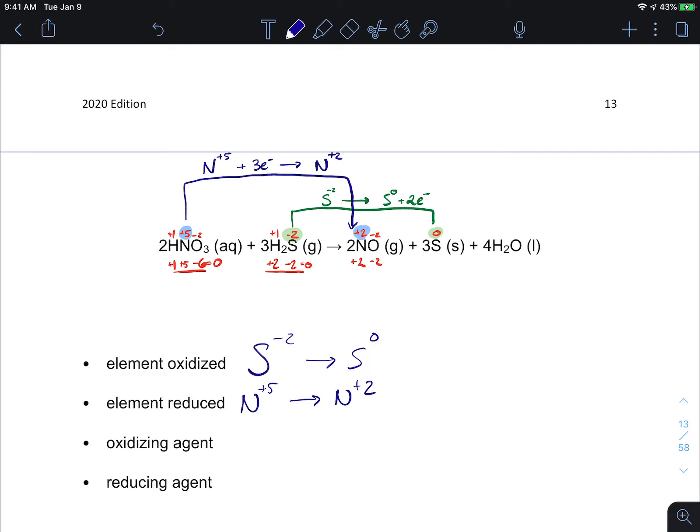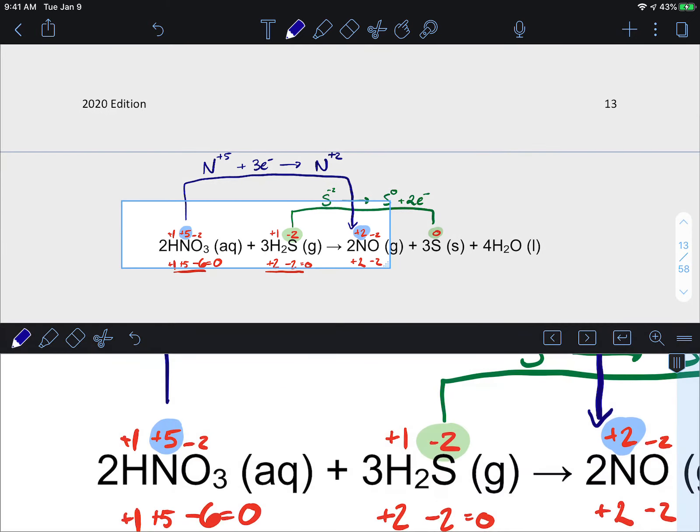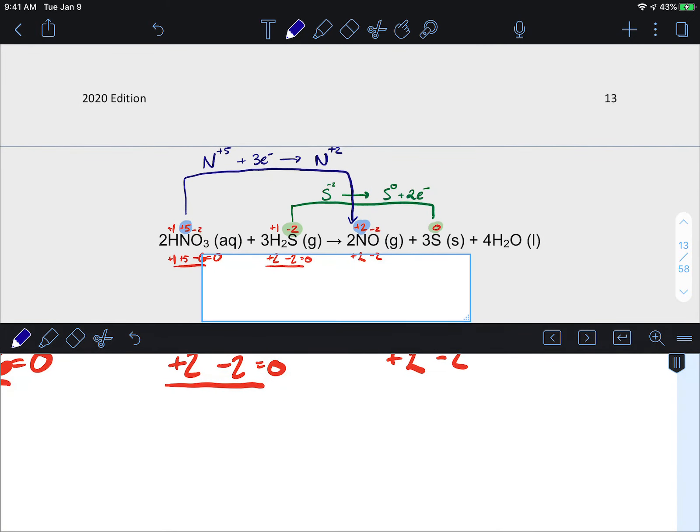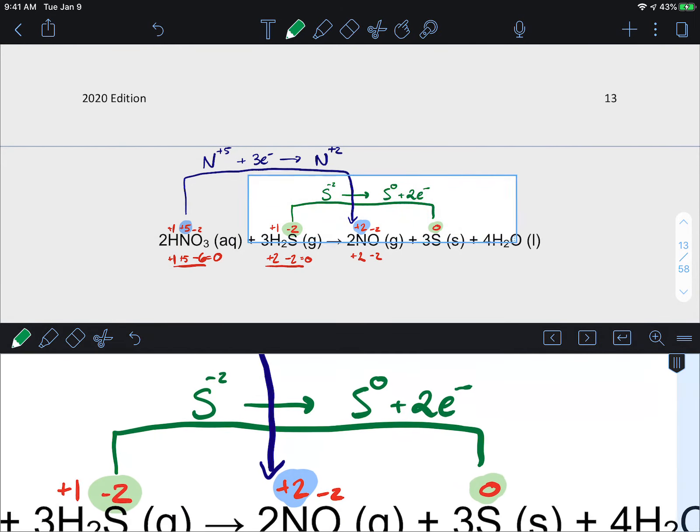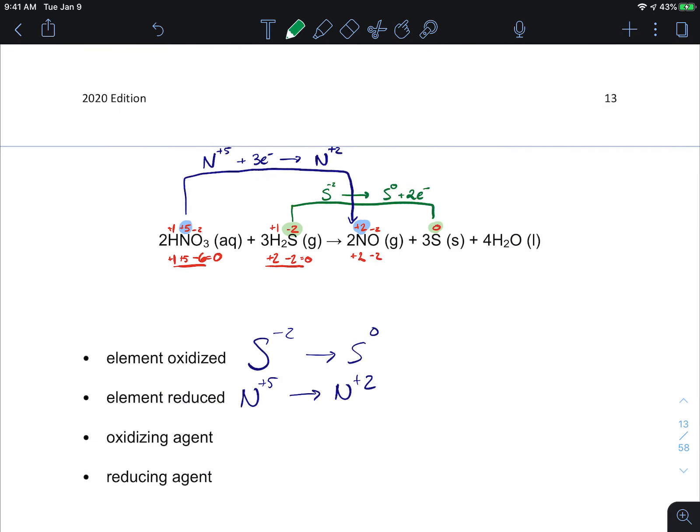Which is the oxidizing agent then? Who gave up the electrons? So which one is the oxidizing agent? Oxidizing agent means the chemical that made a different chemical go up in oxidation. Who's doing the action? Who is taking, who's causing this sulfur to go up? So sulfur was the one that was oxidized. Who did that? Well it wasn't nitrogen. It was nitric acid, HNO3.